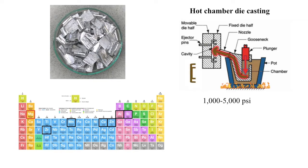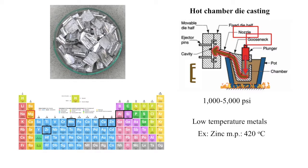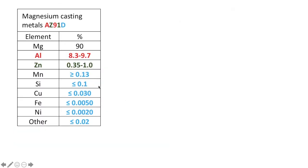The hot chamber is used with alloys with low melting temperatures, since using alloys with high melting temperatures will result in damage to the gooseneck, nozzle, and other components. And although magnesium's melting point is high, when combined with other metals its melting point decreases. An example of this is magnesium AC91D, which is the most common alloy used.